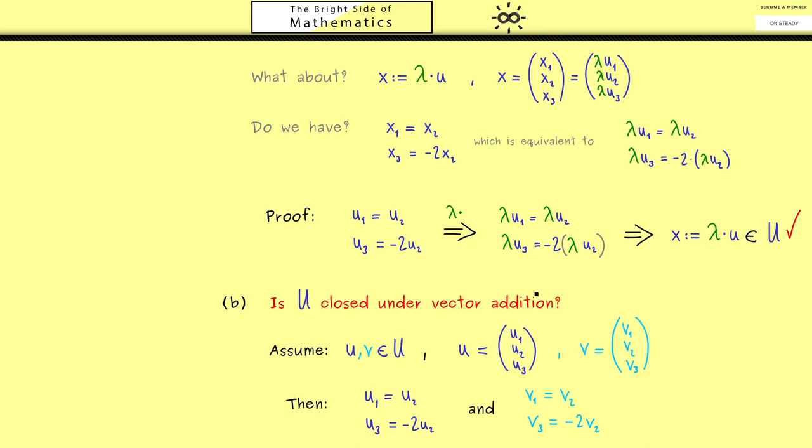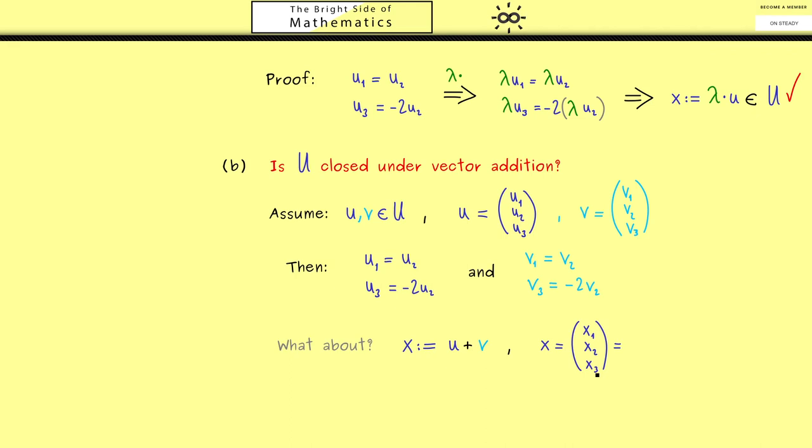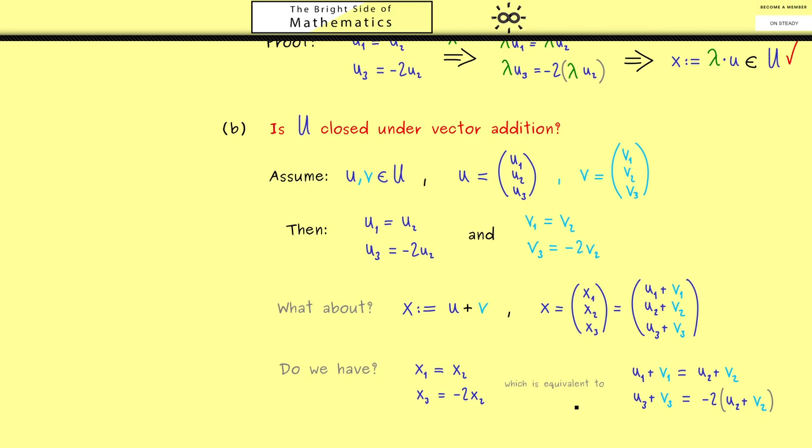Moreover, now we have to ask: are the two equations also fulfilled for a new vector which is given by the sum of u and v? Of course, for this new vector x, we immediately know how the components x₁, x₂, and x₃ are formed with the components of u and v—namely, we simply have uᵢ plus vᵢ. Now, as before, the new question is: is this equality and this equality fulfilled for our new vector x? We can answer this question when we reformulate the two equations with the components u₁ and v₁. In other words, this is now what we want to show, and we can only use these four equations here.